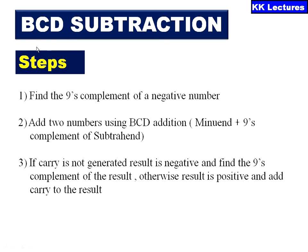Now let us proceed to BCD subtraction. The steps involved are: first, find the 9's complement of the subtrahend, which is the negative number. Then add the two numbers using BCD addition — that is, minuend plus 9's complement of the subtrahend gives the BCD subtraction result. If a carry is not generated, the result is negative and you find the 9's complement of that result. Otherwise, the result is positive and you add the carry to the result.